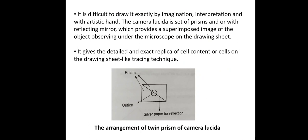It helps to produce a detailed and exact replica of the cell content or the cell on the drawing sheet, like a tracing technique. It is an arrangement of twin prisms in the Camera Lucida, and in the center there is an orifice and silver paper for reflection.